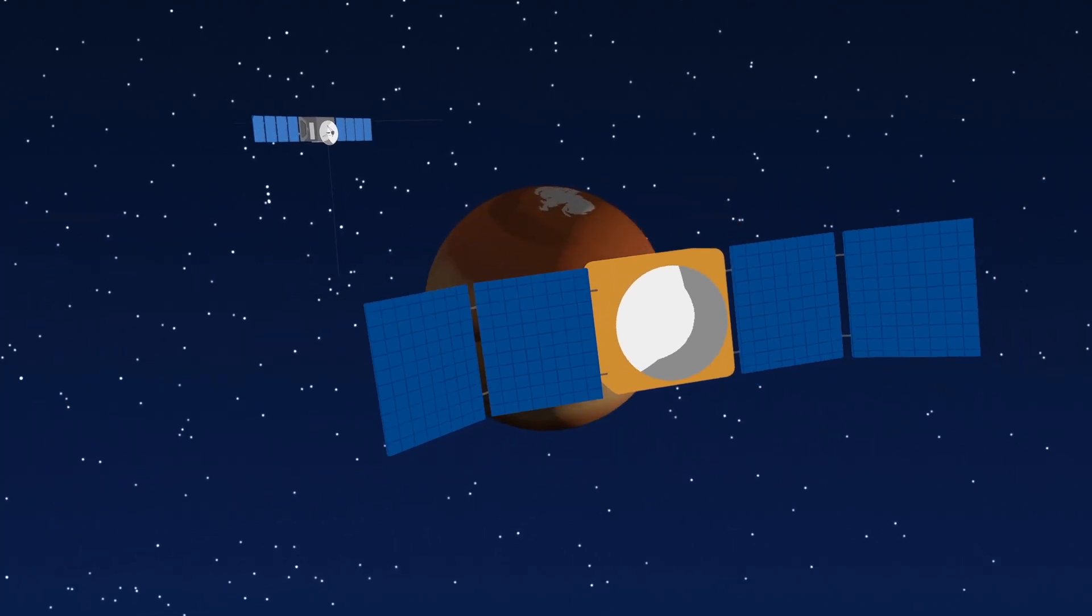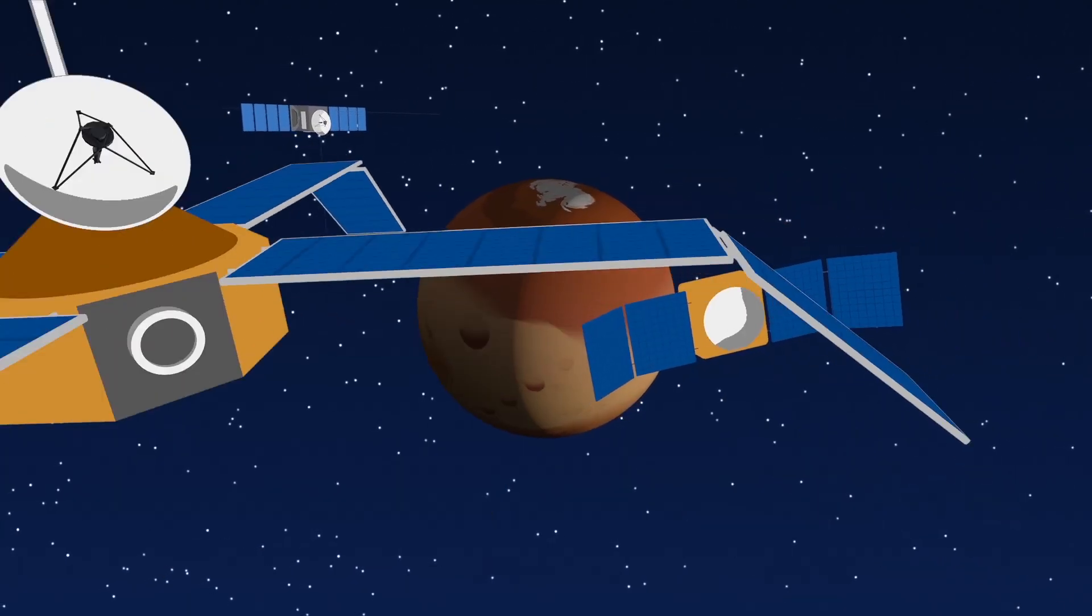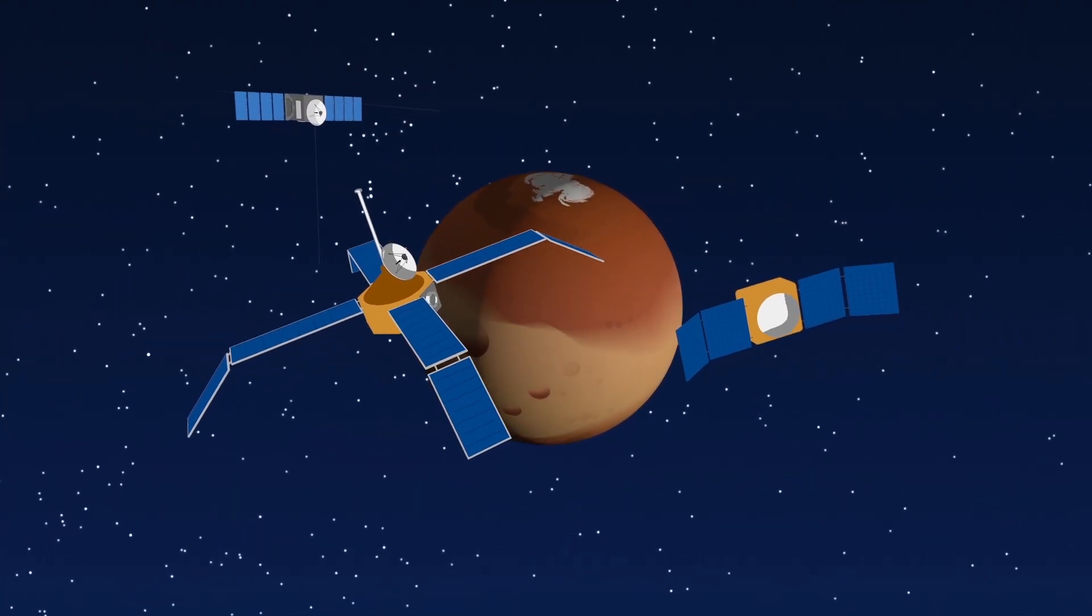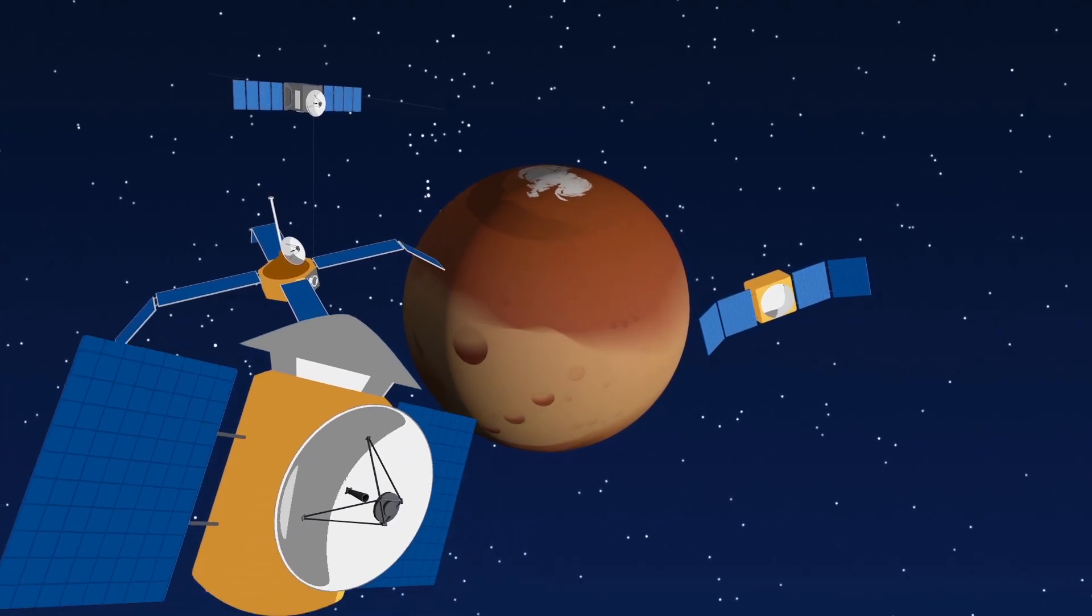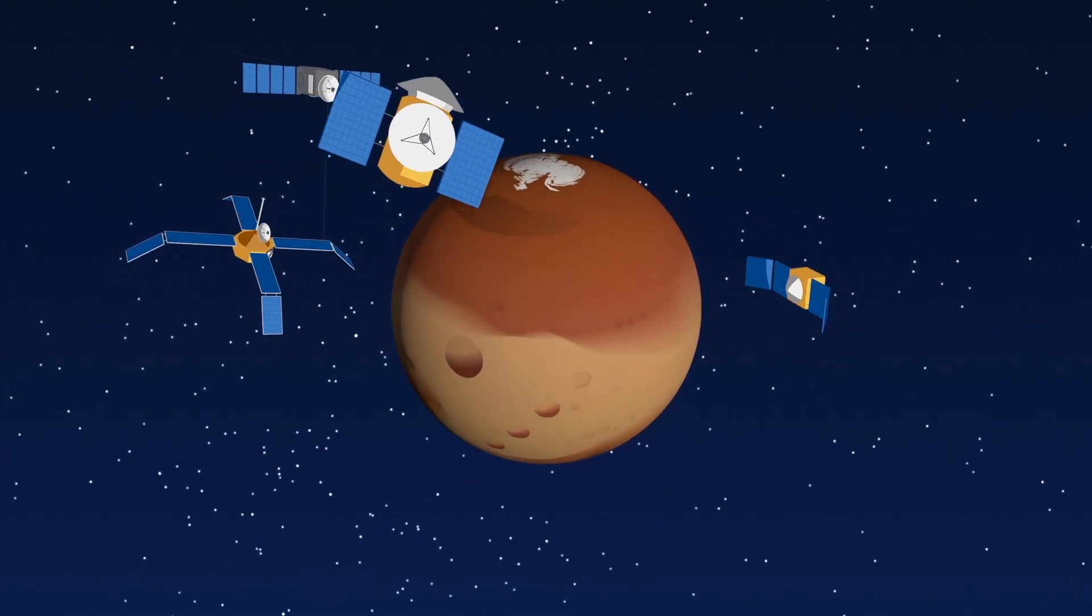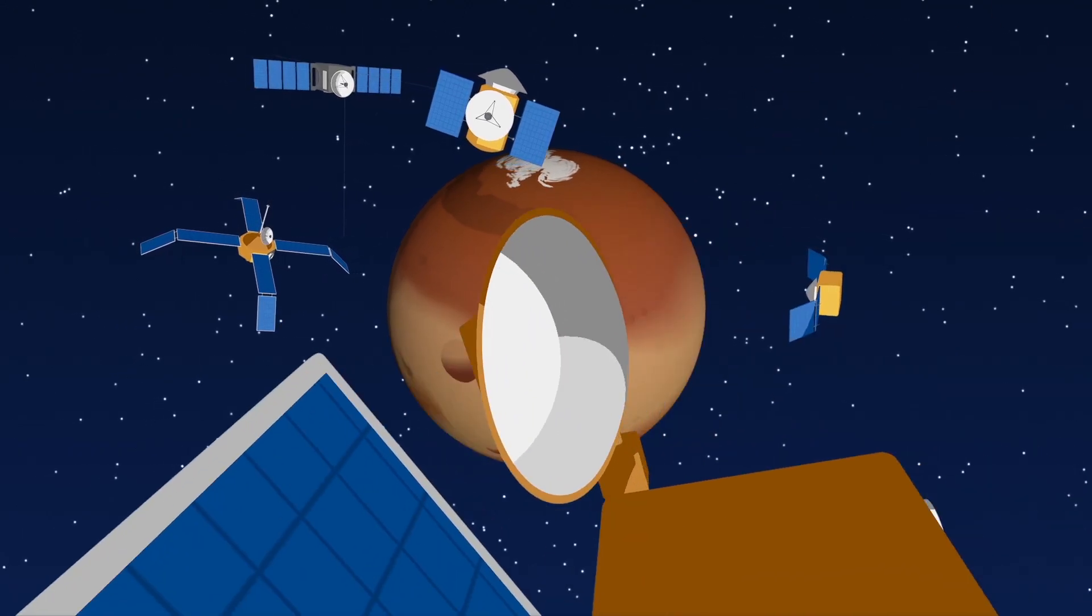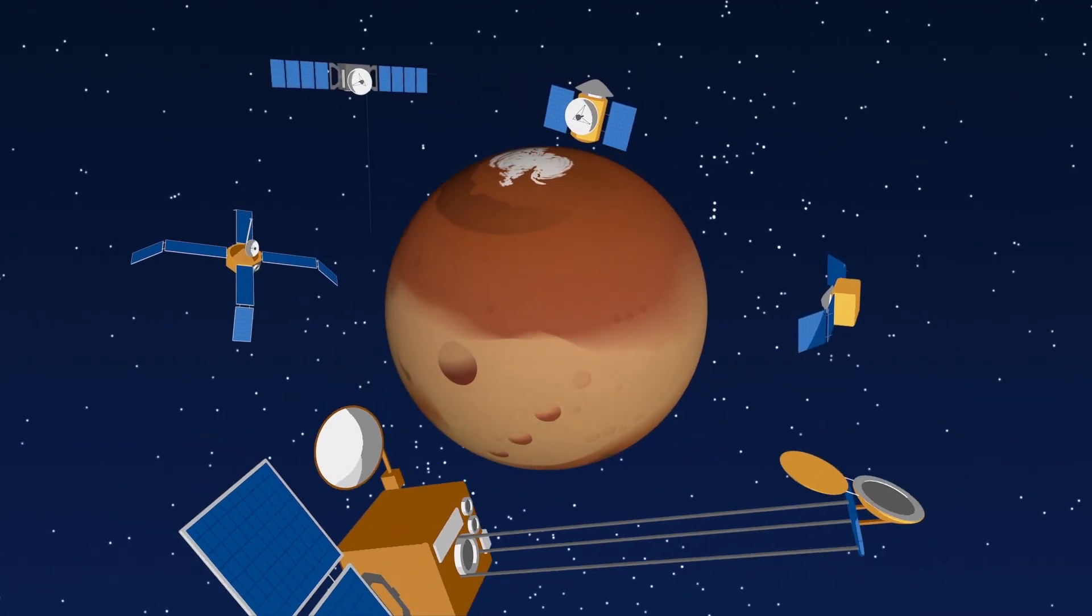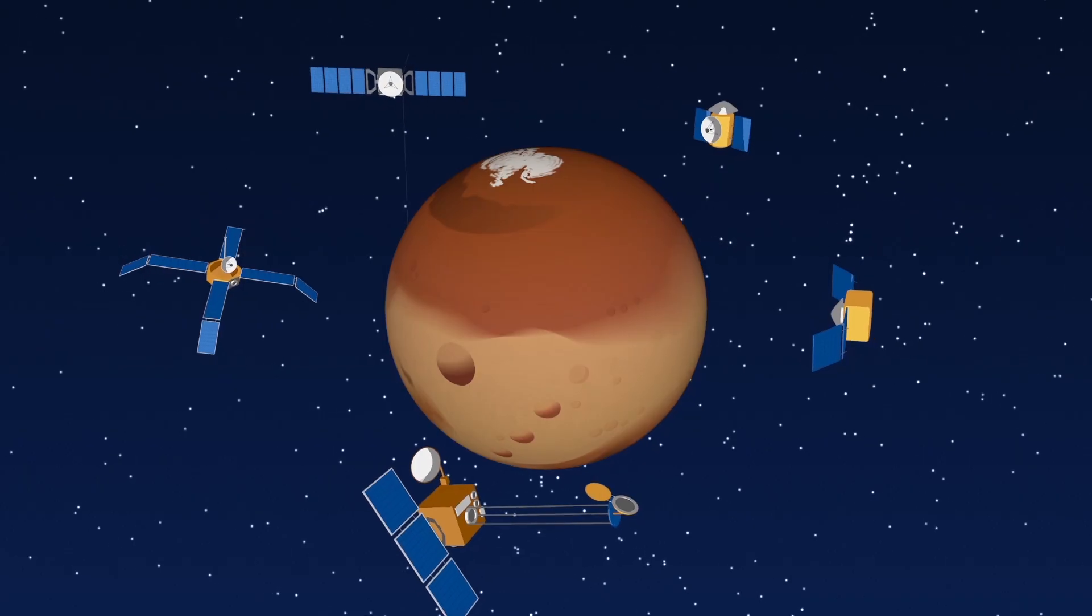Humans have sent more than 40 robotic missions to explore Mars. Soon there'll be more. Some are in orbit, like Mars Express, and some have landed on the surface, like a NASA rover called Curiosity. They've revealed a lot of Mars' secrets.